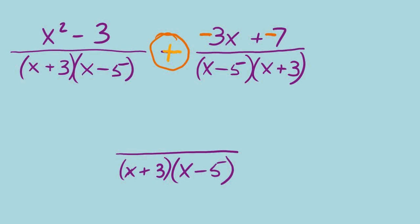After flipping signs in the numerator and changing it to an add, we can combine like terms as usual. There is an x squared with no other x squared term — bring it down. There's a minus 3x with no other x terms. Then negative 3 combined with negative 7: adding negative 3 plus negative 7 gives negative 10.